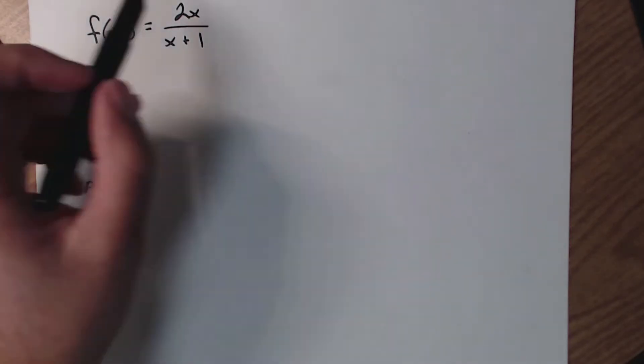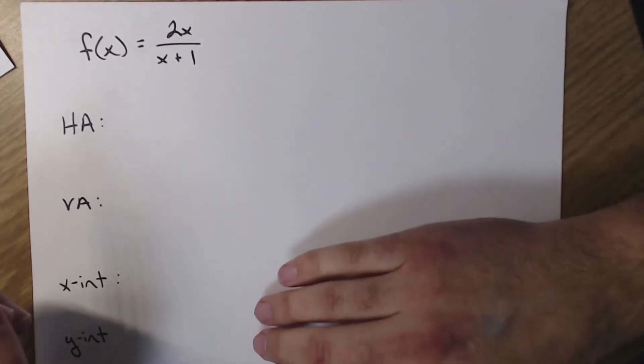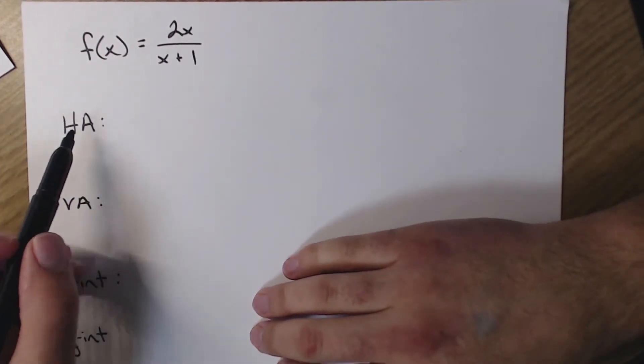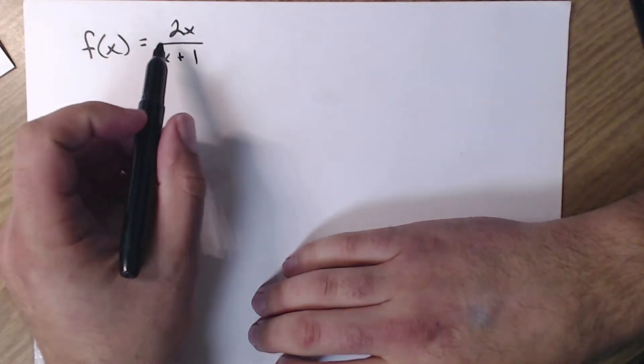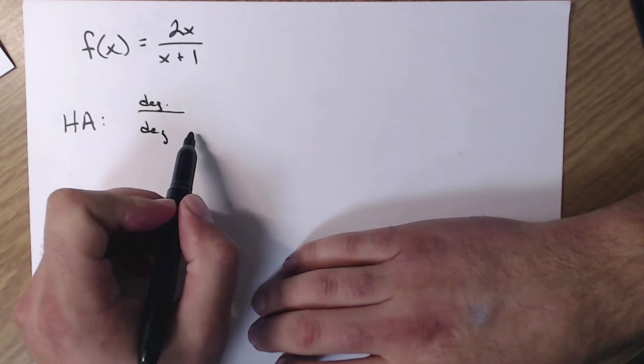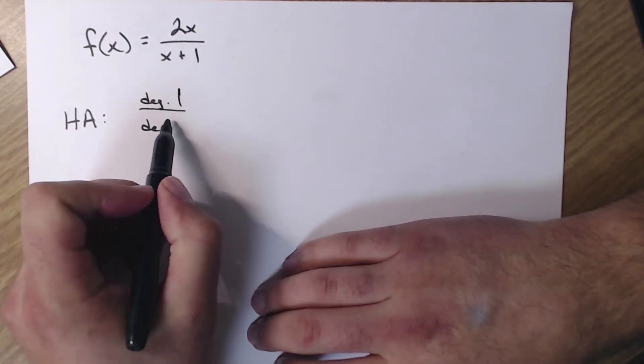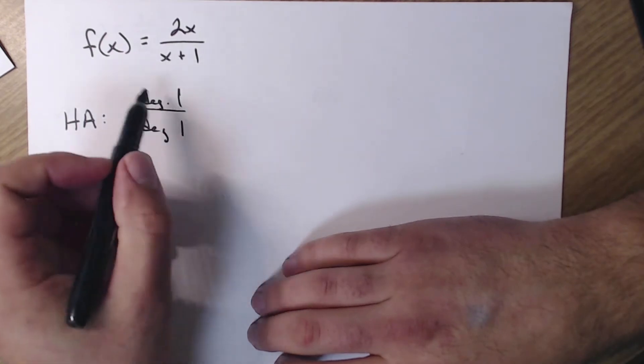So starting off with this formula or this equation, we're going to find horizontal asymptotes first then vertical. So to find horizontal, I need to look at the degree of the top and the degree of the bottom. The degree in the numerator is one. The degree in the denominator is one.